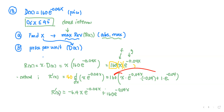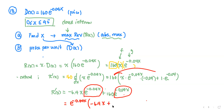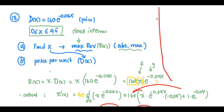Both terms have the common factor e^(-0.04x), so factor that out. Inside the parentheses we have negative 6.4x plus 160. Since we have a negative power, we can write it as the reciprocal: R prime equals (-6.4x + 160) all divided by e^(0.04x).